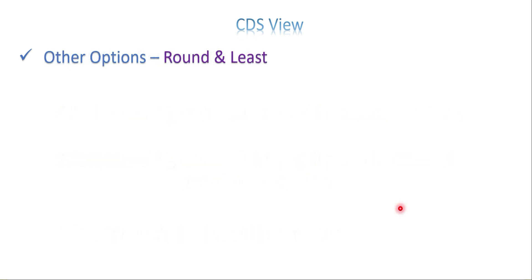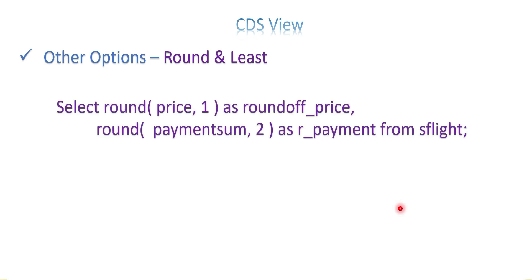There are two more functions: ROUND and LEAST. For ROUND, the syntax is SELECT ROUND(field, decimal_places). You can use more than one ROUND in the same SELECT query for different fields. For example, one field rounded to one decimal place and another field rounded to two decimal places - it will round off based on the specified decimal places and give the relevant output.